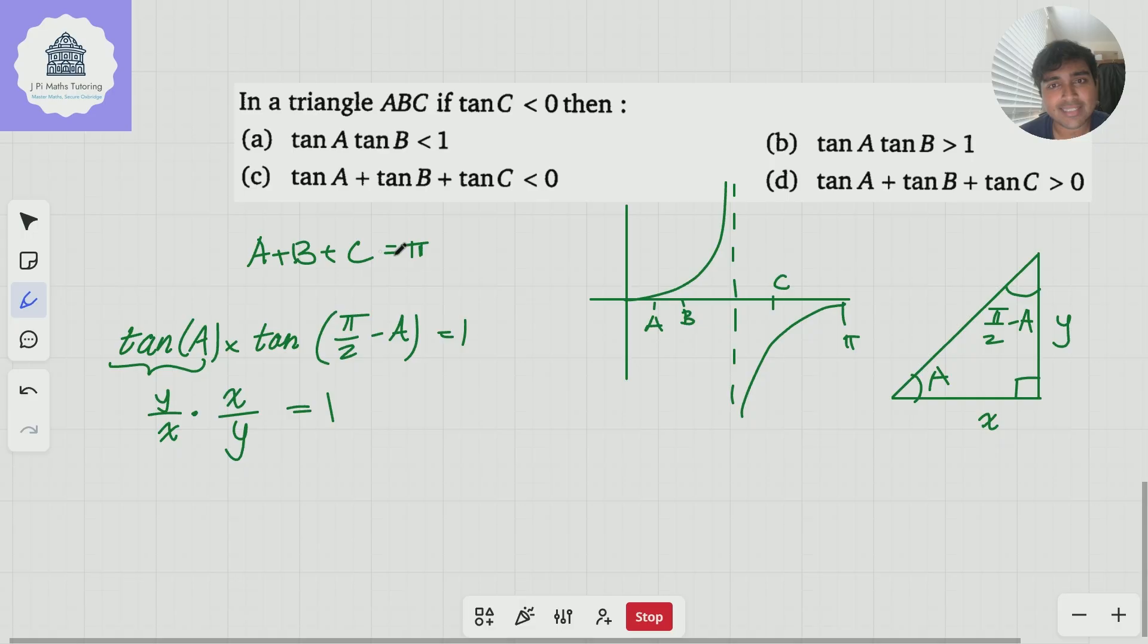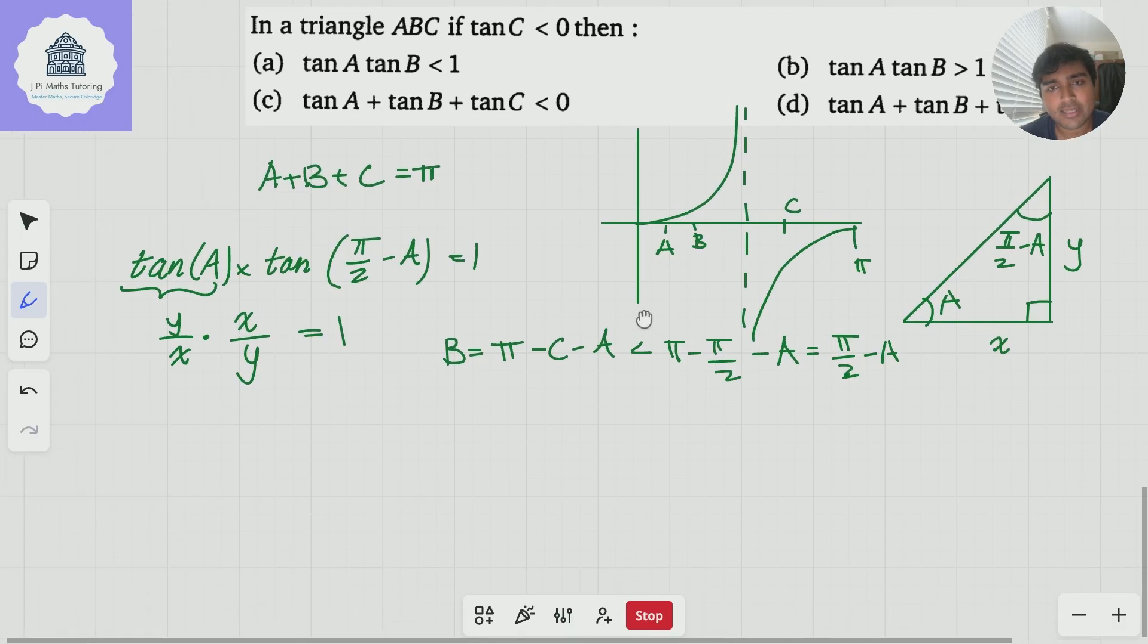Now, we're going to use this here to look at tan A times tan B. The crucial part is, since C is bigger than π/2, we know that B = π - C - A. But we know that C is bigger than π/2. So this thing here is less than π - π/2 - A, which is equal to π/2 - A. So B, angle B, is less than π/2 - A.